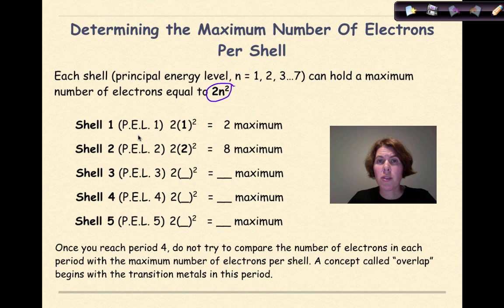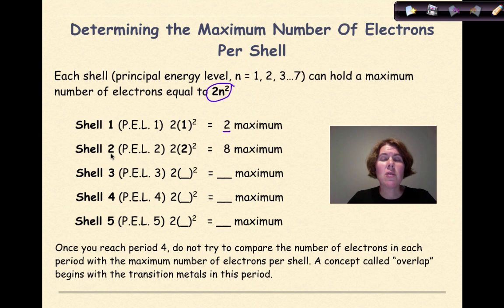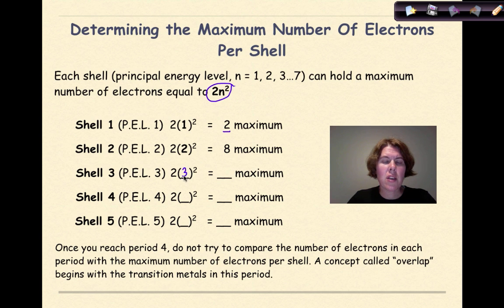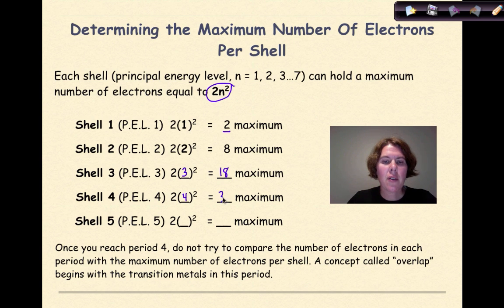Each shell or principal energy level going 1 through 7 can hold a maximum number of electrons equal to the 2n² formula. So in shell number 1, we have 1 squared times 2, giving 2 electrons maximum. In shell number 2, 2 squared is 4 times 2 is 8. In shell 3, 3 squared is 9 times 2 is 18. Shell 4: 4 squared is 16 times 2 is 32.